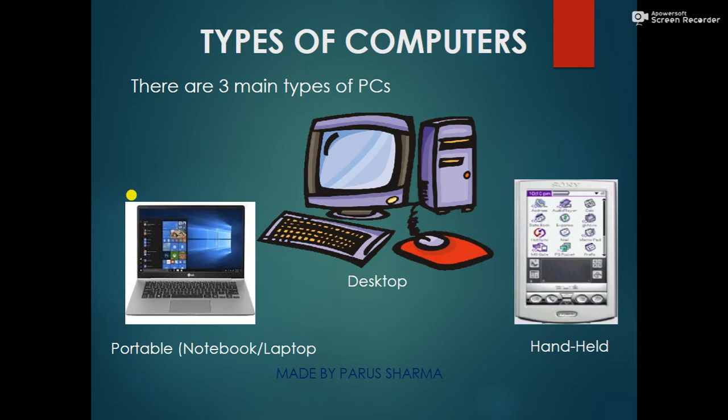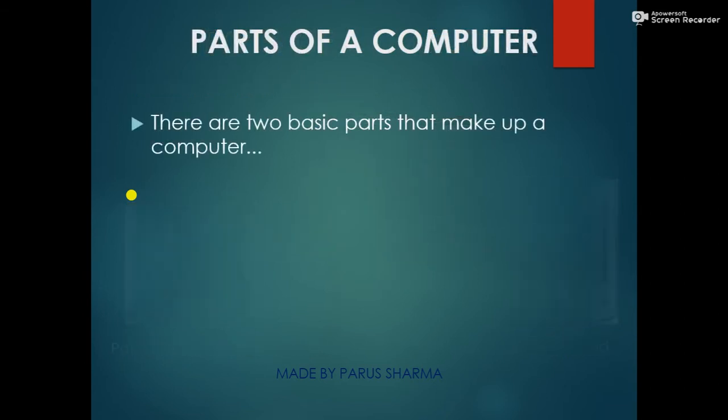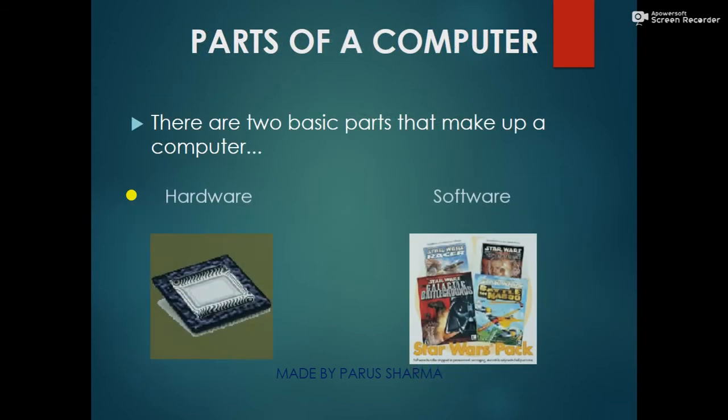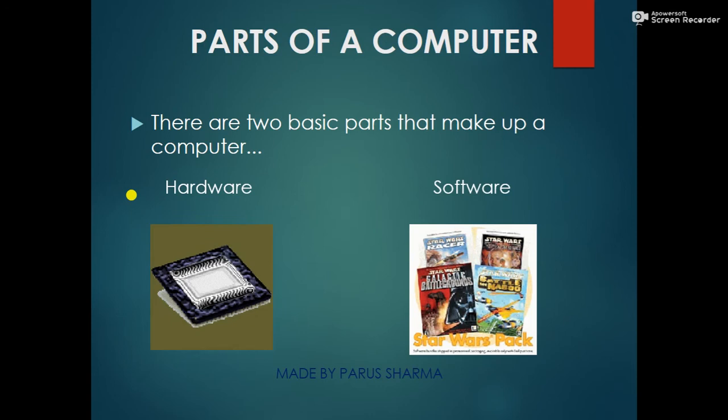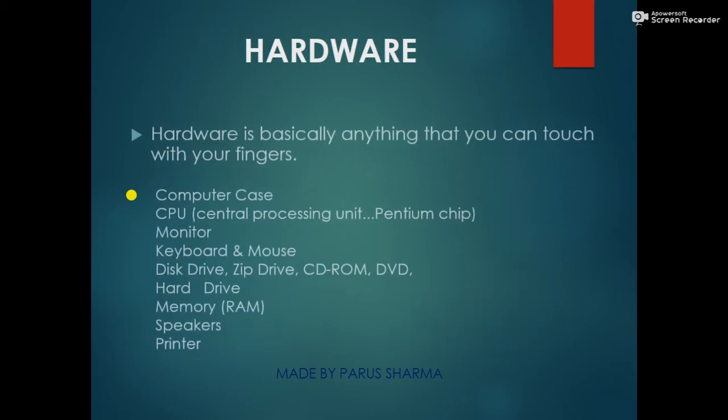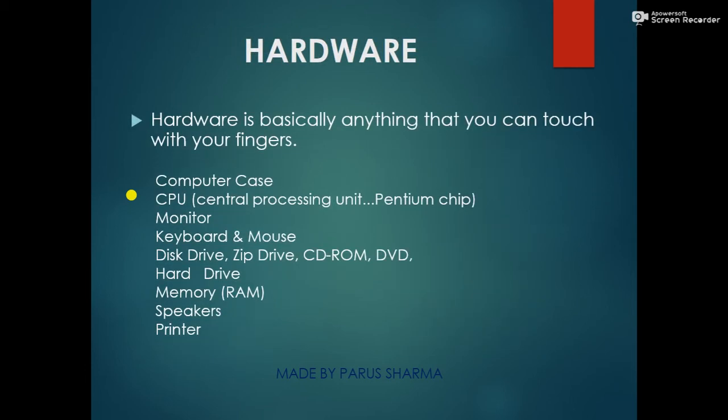The parts of a computer are two basic parts: hardware and software. Hardware is the part of a computer which you can touch and feel with your fingers, like the computer case, CPU,